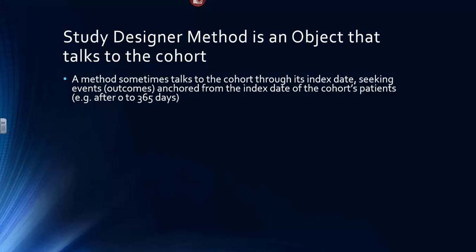So, for example, the method might say, find all the events, or find the first event, that occurred within 0 to 365 days of the cohort's Index State. This would be the typical within statement.